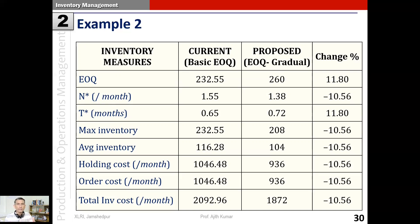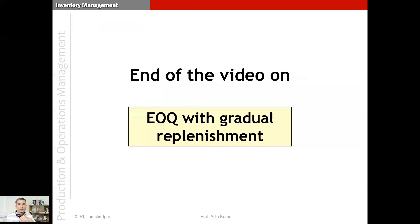Moving from producing an entire quantity at one shot and transferring it all at once, to a system of continuous production and replenishment, is better from the perspective of managing and saving inventory costs. The lean approach, made popular by Toyota and increasingly adopted by companies, tries to move toward a more continuous form of inventory movement rather than maintaining large piles of inventory. The goal is to make inventory flow more continuous and fluid throughout the organization.